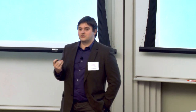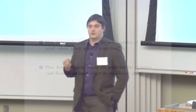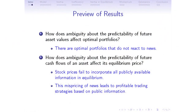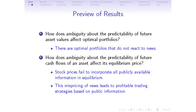There are two main questions we're trying to answer in this paper. The first one is: how does ambiguity about the predictability of future asset values affect optimal portfolios? And then in equilibrium, how does the ambiguity about the predictability of future cash flows affect its equilibrium price? The answer to the first question is that there will be optimal portfolios — risky portfolios and also the risk-free portfolio — that will not always react to news. And in equilibrium, the stock price will fail to incorporate all publicly available information, and as a result, there will be momentum.